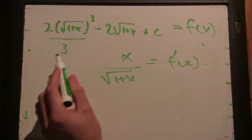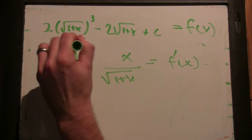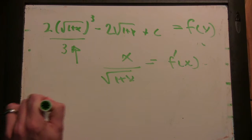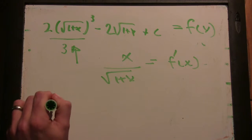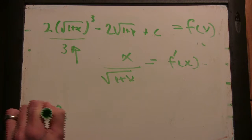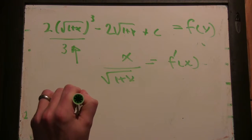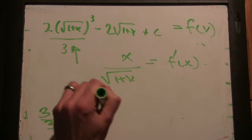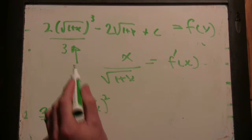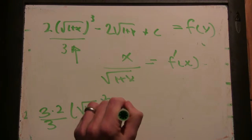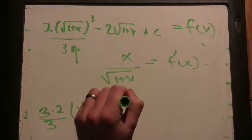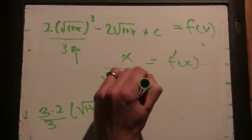Okay. And we can just work that out pretty quickly. So, when you take the derivative of this, you get 3 times 2 thirds square root of 1 plus x squared. Yep.